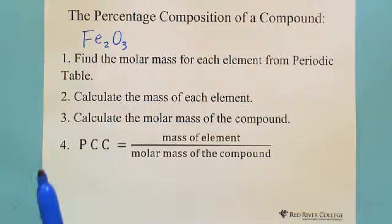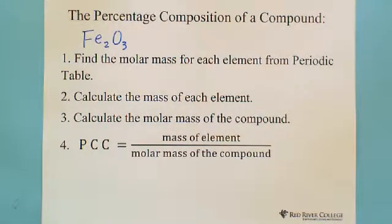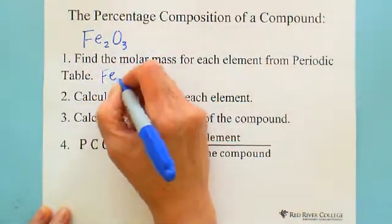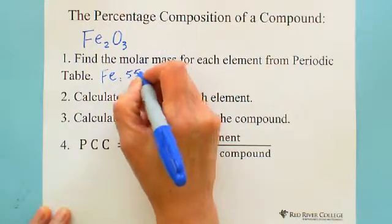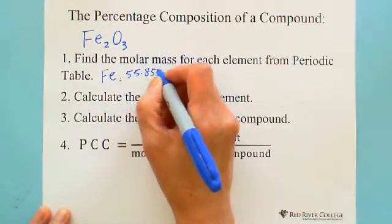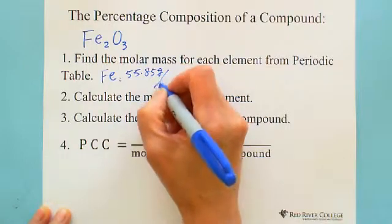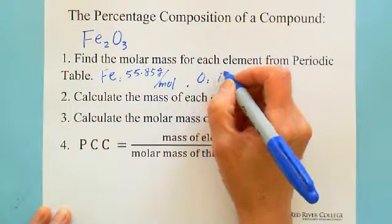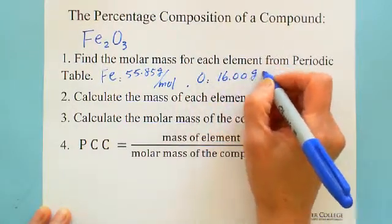To do so, the first step is to find the molar mass for each element from the periodic table. For example, to find the molar mass for iron, we check the periodic table and find it is 55.85 grams per mole. For oxygen, it is 16.00 grams per mole.